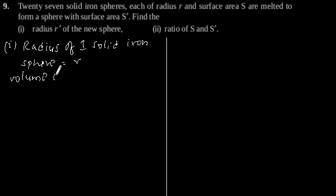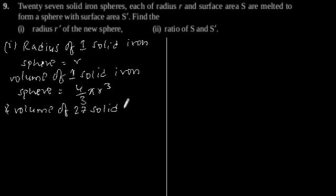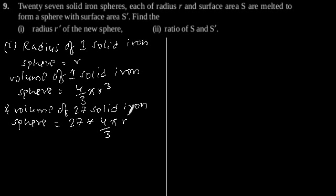Volume of one solid iron sphere will be 4 by 3 pi r to the power 3, and volume of 27 solid iron spheres will be 27 into 4 by 3 pi r to the power 3.